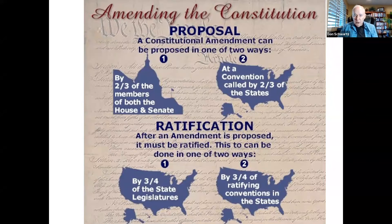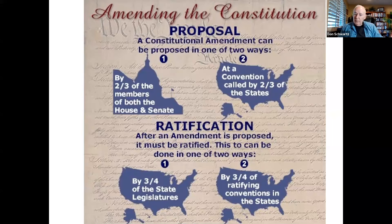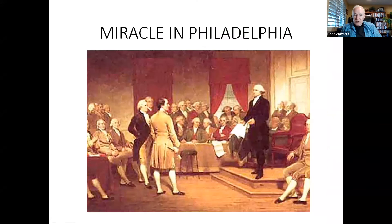Once an amendment is proposed, there are two ways to ratify it. If three-quarters of state legislatures ratify, the amendment is approved — today this requires 38 states. Or an amendment could be approved by three-quarters of ratifying conventions in the states, but this has never happened either. Every amendment has been adopted when three-quarters of state legislatures approved it.